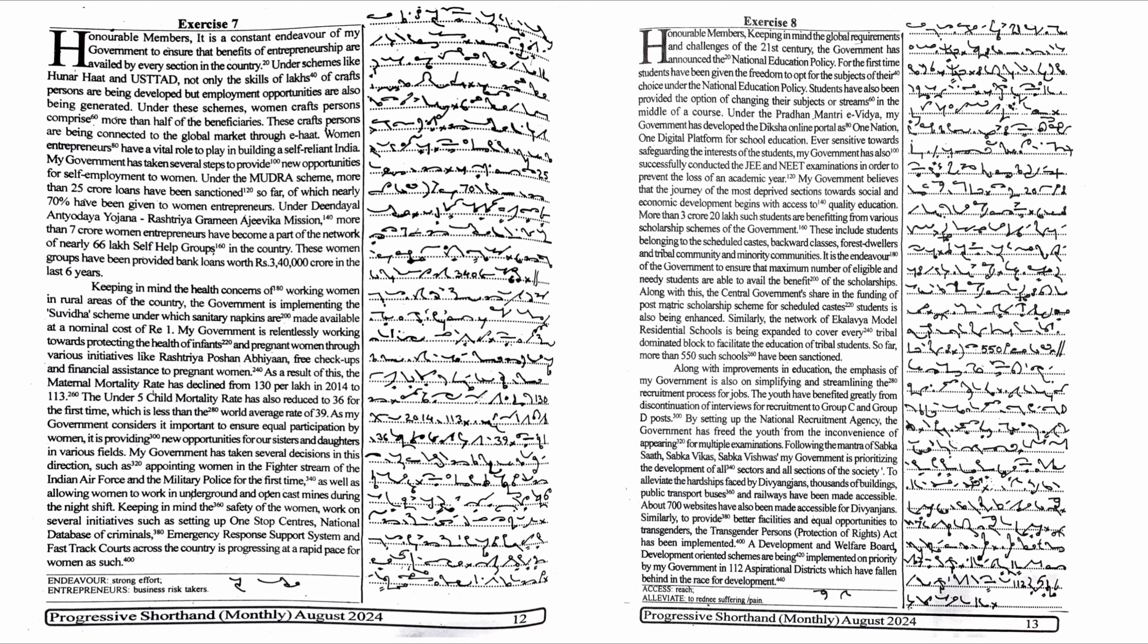My government is relentlessly working towards protecting the health of infants and pregnant women through various initiatives like Rashtriya Poshan Abhiyan, free check-ups and financial assistance to pregnant women. As a result of this, the maternal mortality rate has declined from 130 per lakh in 2014 to 113. The under-5 child mortality rate has also reduced to 36 for the first time,